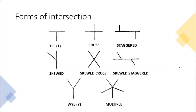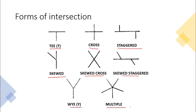Now, intersections have different forms, and their names are coined based on the shape they make. In this slide, the forms of intersection include: T intersection, cross, staggered, skewed, skewed cross, skewed stagger, Y intersection, and multiple intersection. I have tried to show photographs for each of them.